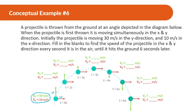Fill in the blanks to find the speed of the projectile in the X and Y direction every second it is in the air until it hits the ground at six seconds. We see every second: time zero, one second, two seconds, three seconds, four seconds, five seconds, six seconds.